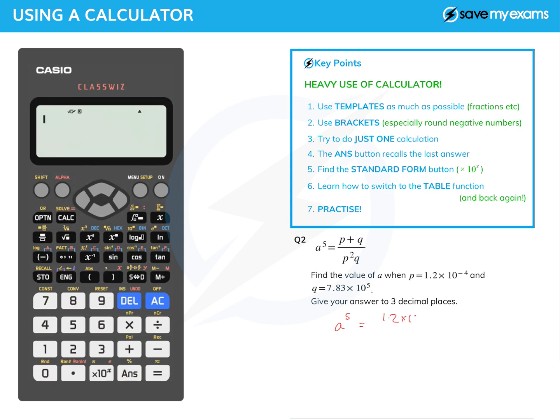Let's put the numbers in. a to the five is 1.2 times 10 to the minus four plus 7.83 times 10 to the five, all over 1.2 times 10 to the minus four squared. I'm putting that in a bracket to show that I'm squaring all of it, times 7.83 times 10 to the five.